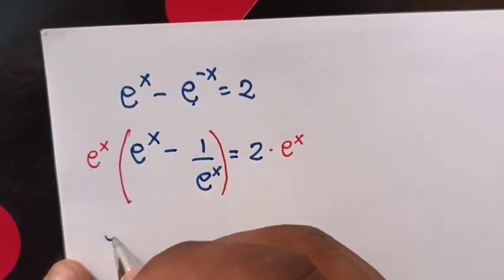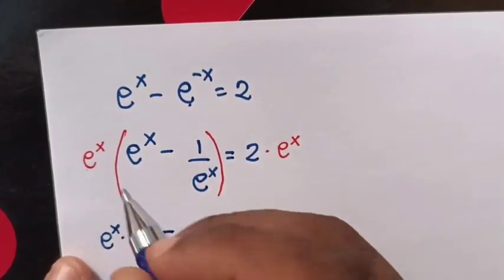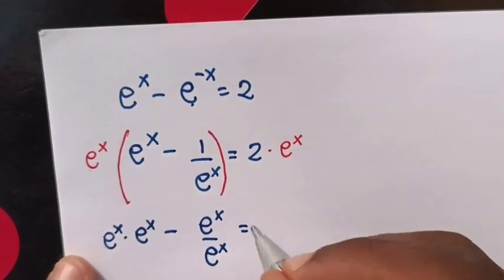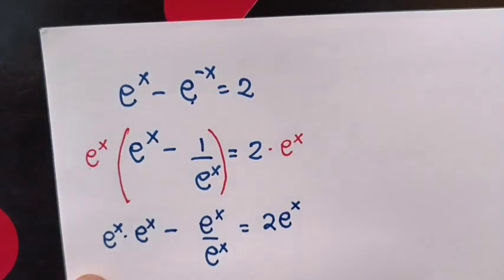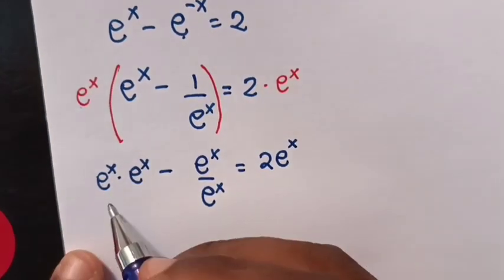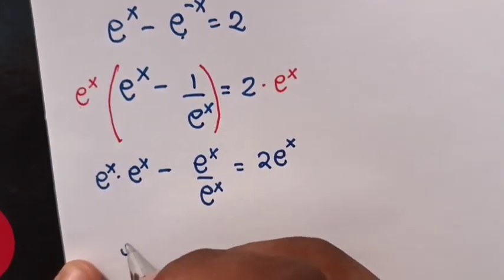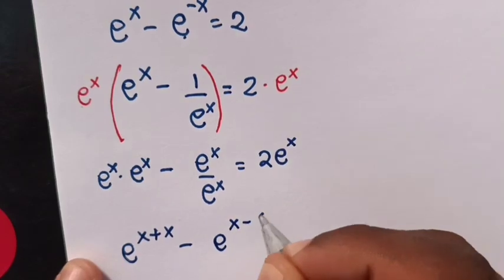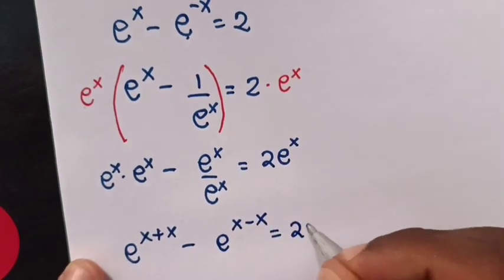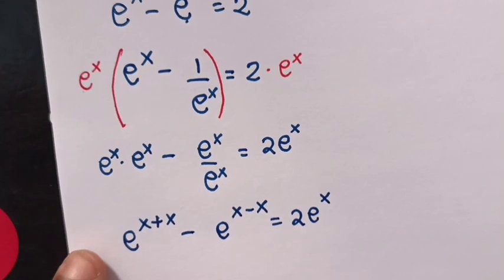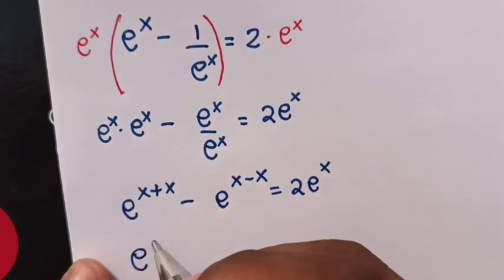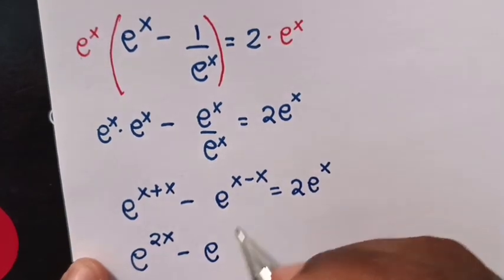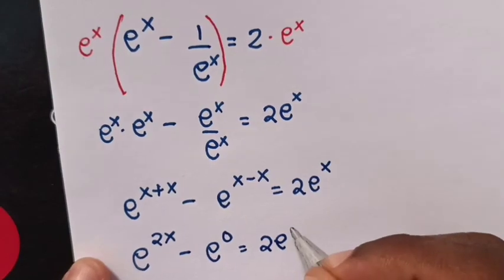So e power x times e power x minus e power x over e power x equals 2 e power x. From the exponential rule, e power x times e power x is e power x plus x, and e power x over e power x is e power x minus x, equals 2 e power x. Now e to the power 2x minus e to the power 0 equals 2 e power x.